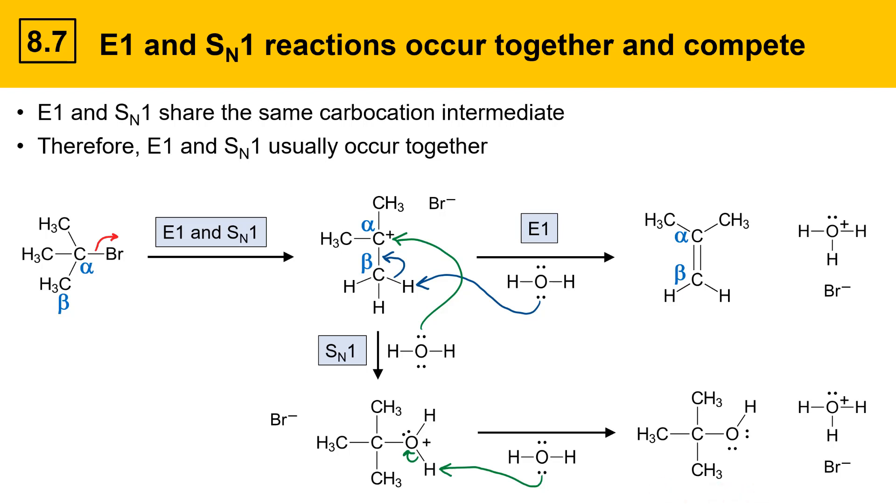Since they share a carbocation intermediate, it's really not possible to control which one of these is formed preferentially. Both form at the same time.